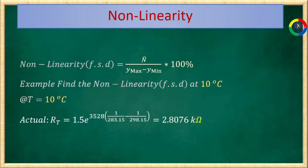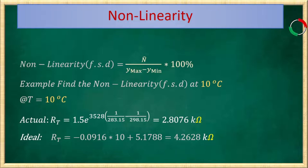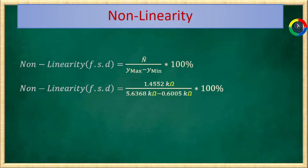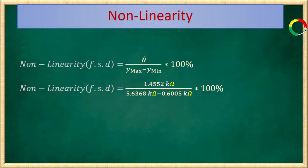So at 10 degree centigrade, the actual resistance value RT by using the exponential function equals 2.8076 kilo ohm. And the ideal resistance RT obtained from the ideal straight line is 4.2628 kilo ohm. So the difference of the non-linearity at 10 degree centigrade is 1.4552 kilo ohm. So the non-linearity equals 1.455 kilo ohm over the range 5.6368 kilo ohm minus 0.6005 kilo ohm times 100 percent, which equals 28.8 percent. So this is a huge non-linearity in thermistors. This high non-linearity is a major disadvantage of using thermistors.